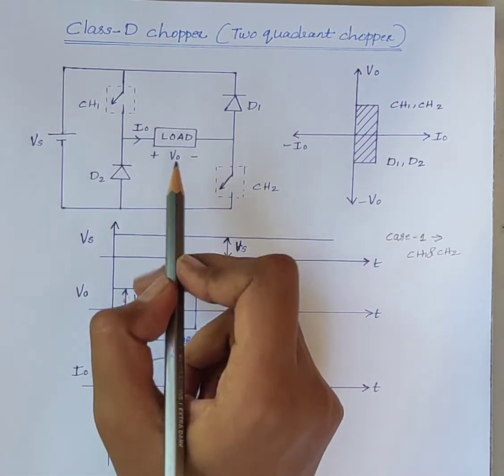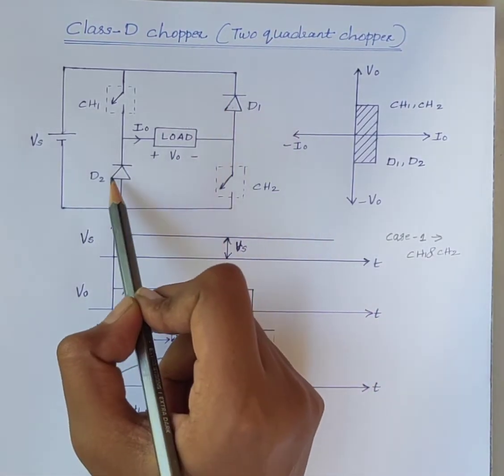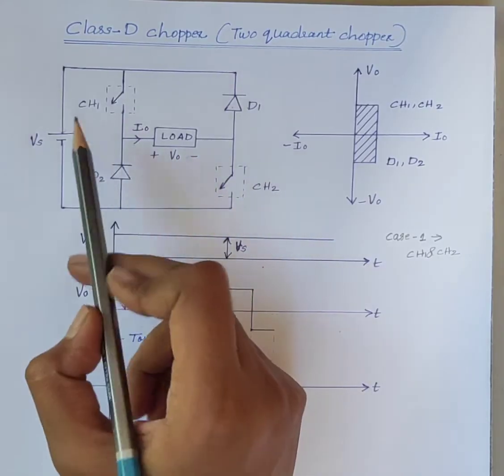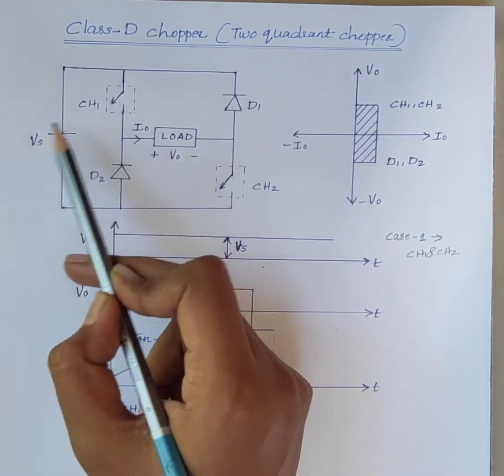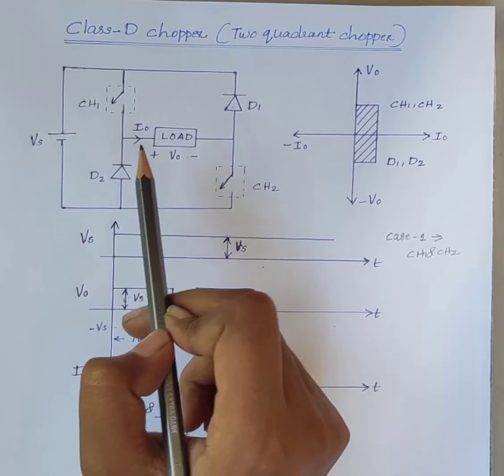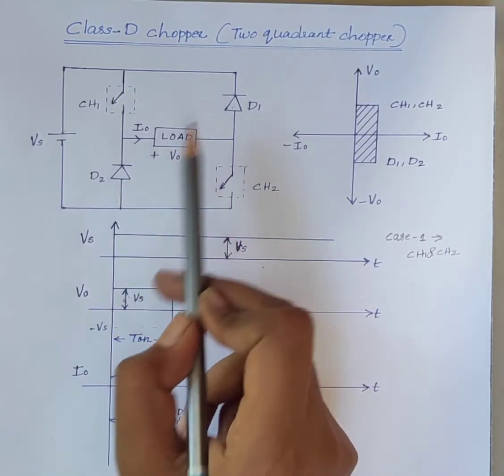In this case, diodes D1 and D2 are reverse biased by the source voltage VS. Hence, they can be treated as open switches.